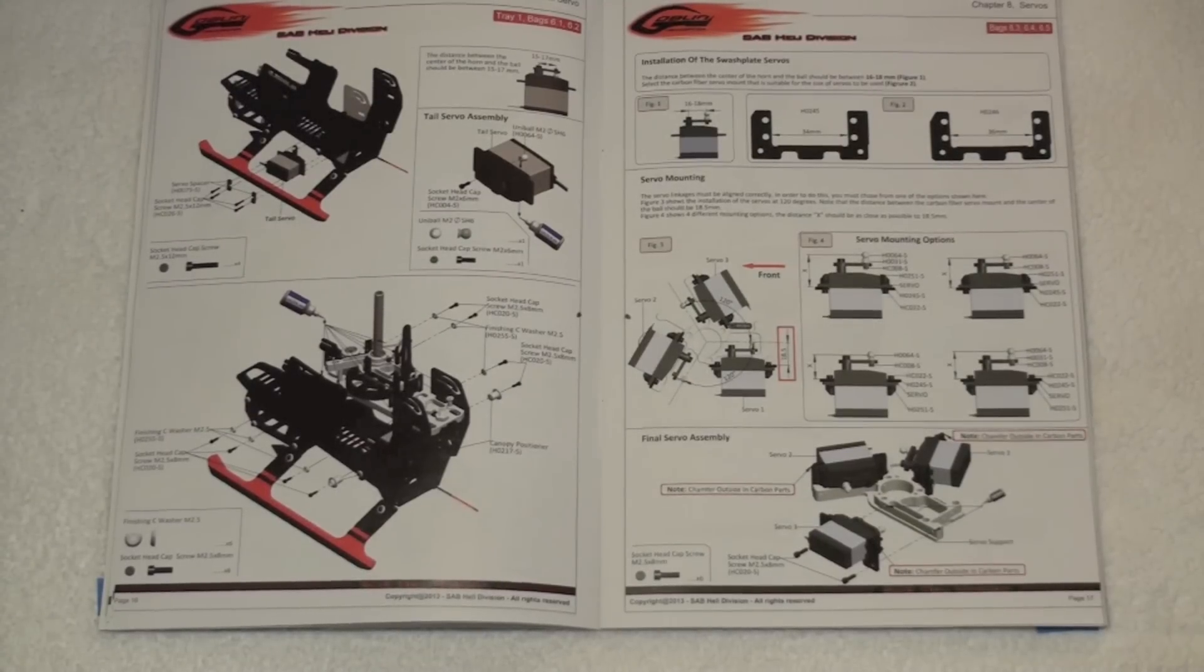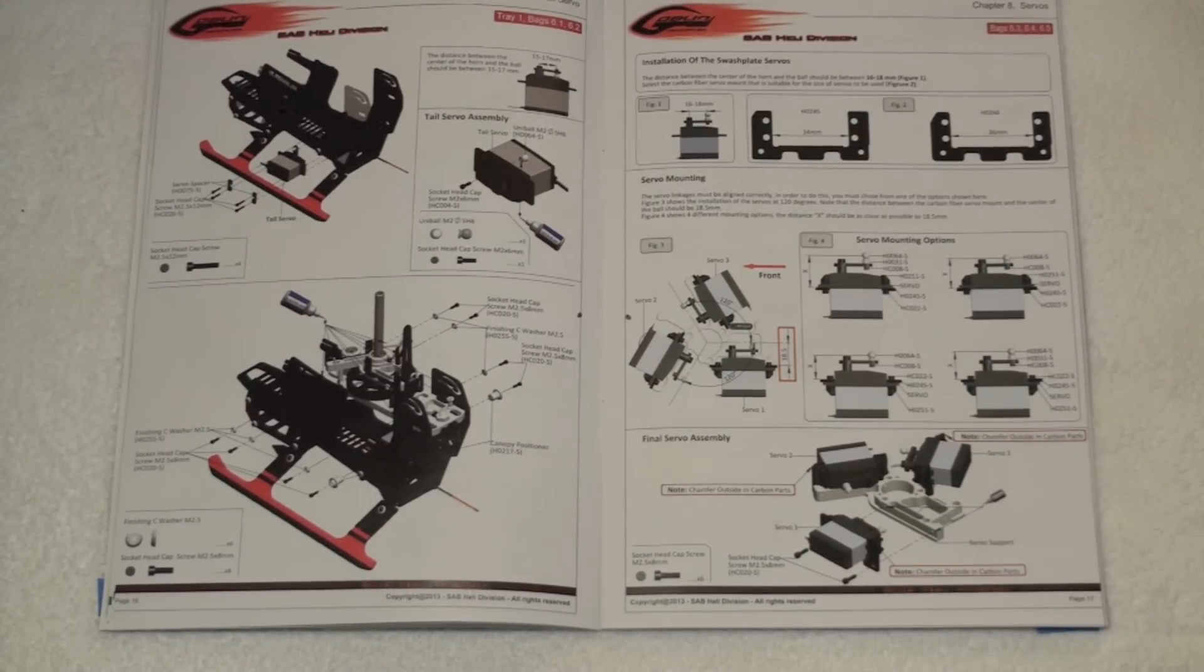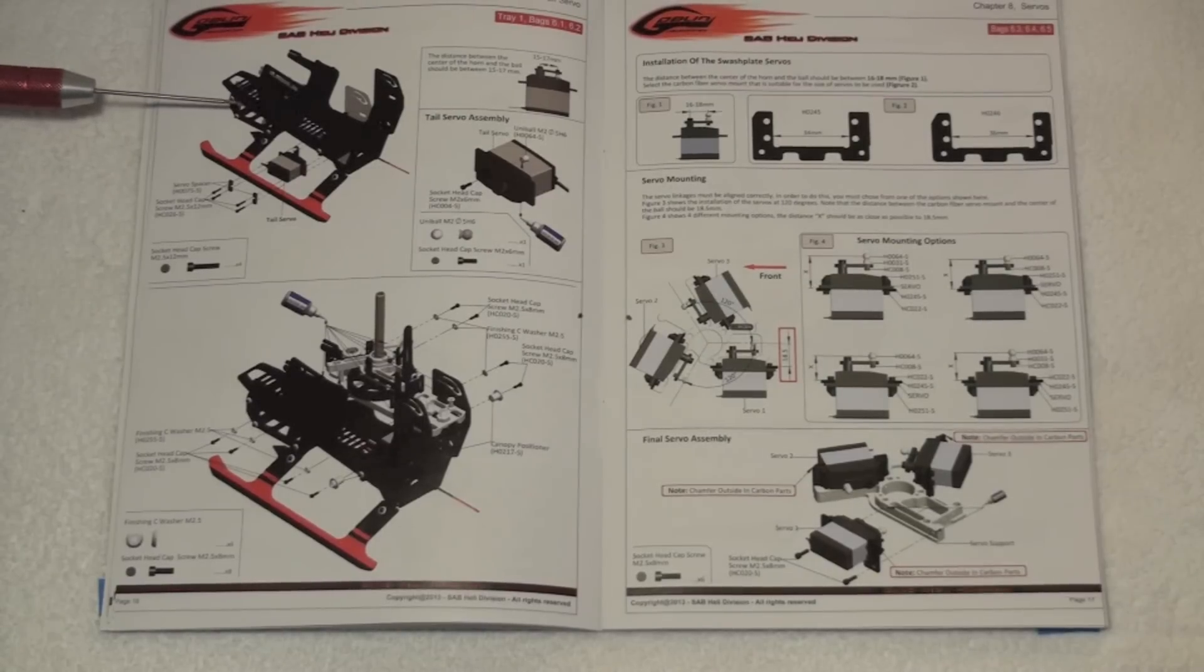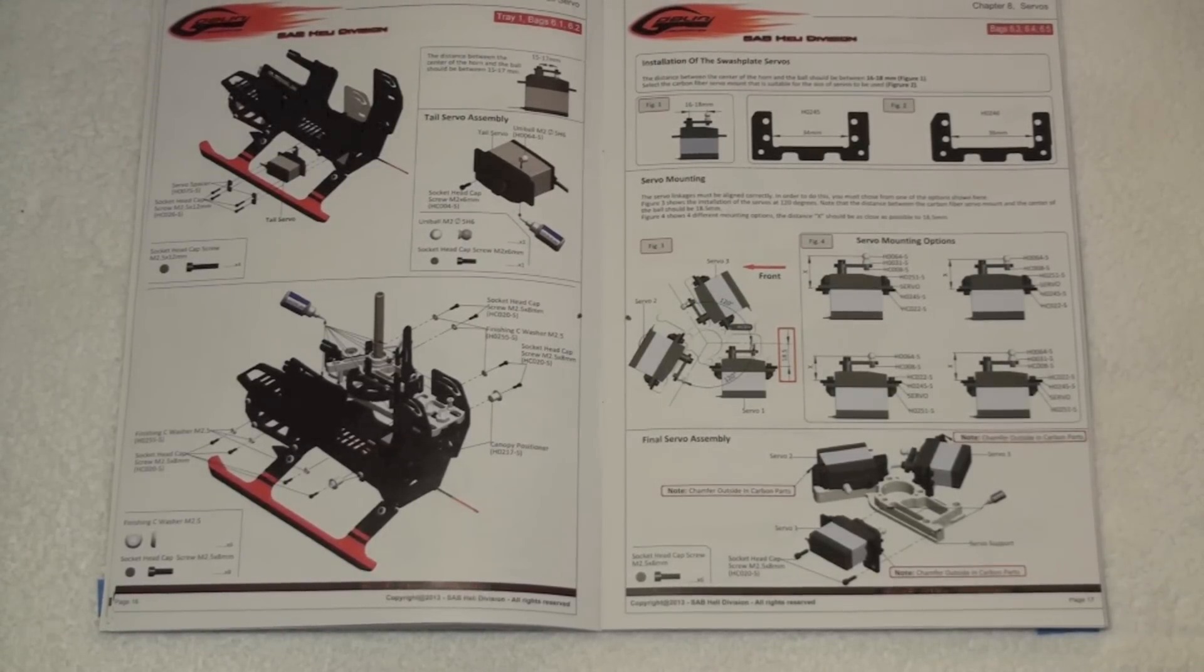Now that we're done with Chapter 7 of the tail assembly, next in the manual is Chapter 8, installation of the tail servo and main cyclic servos.